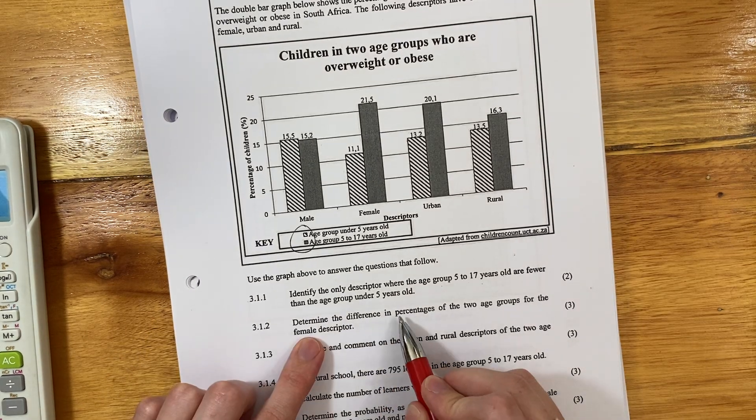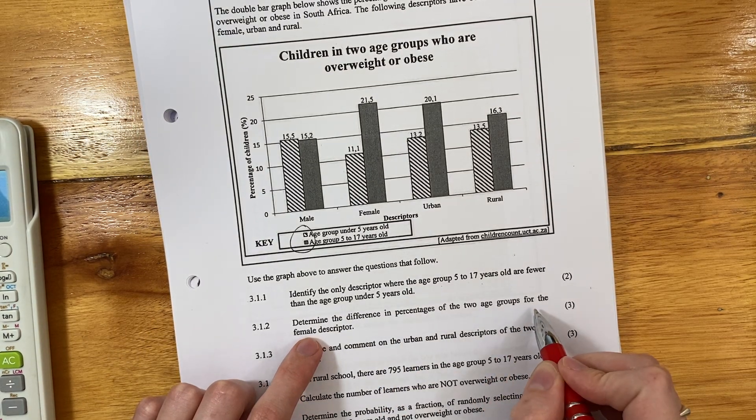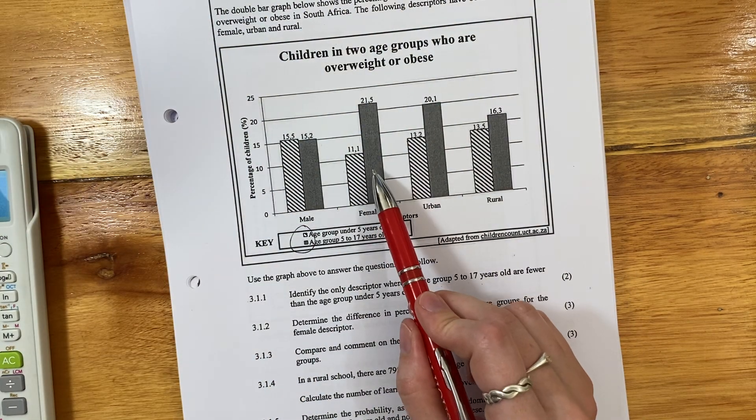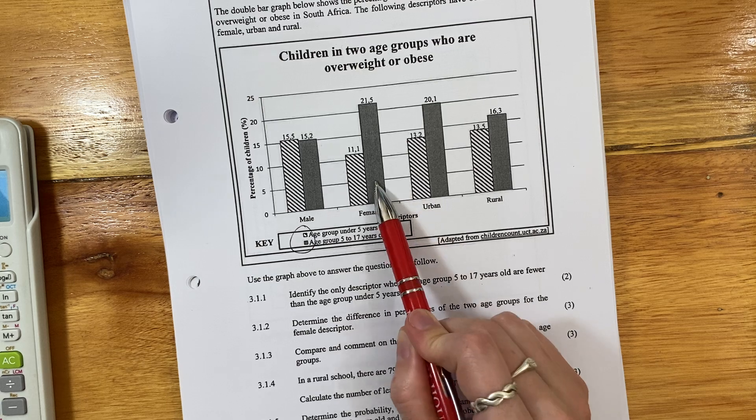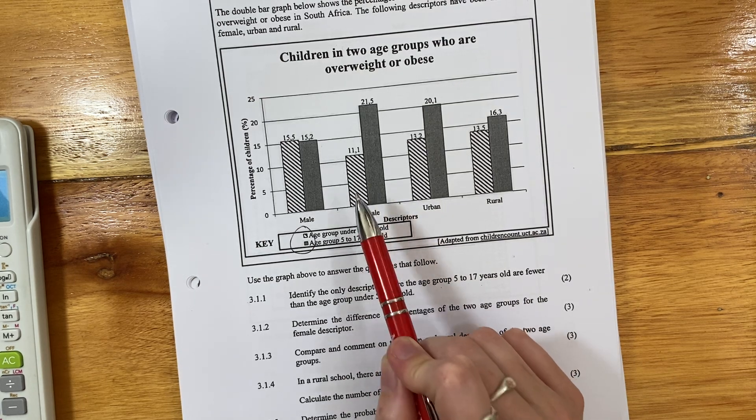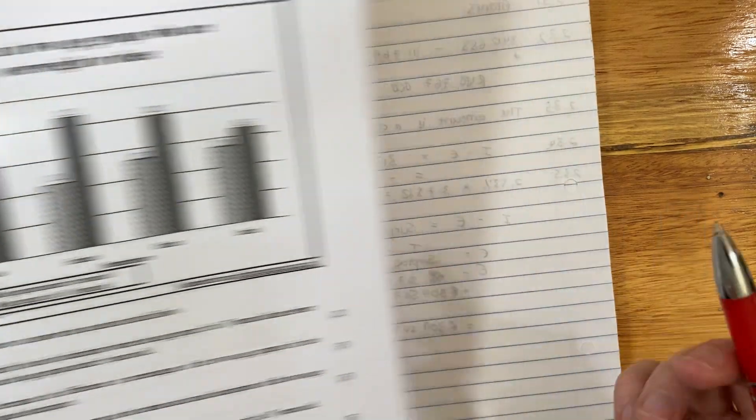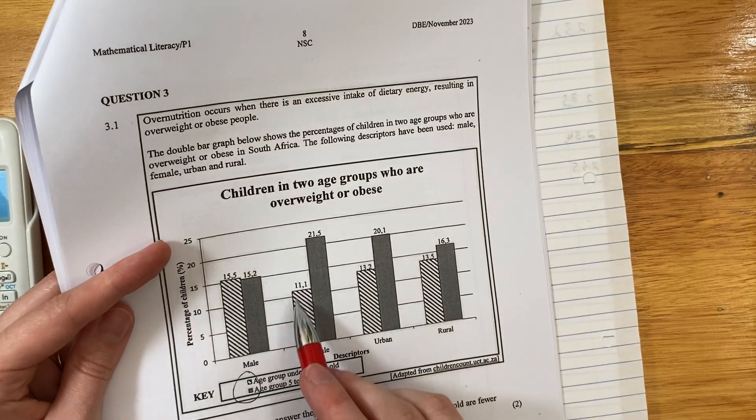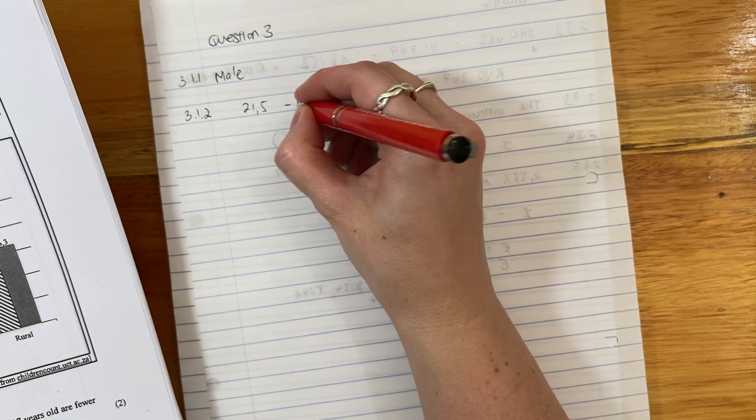Determine the difference in percentage of the two age groups for the female descriptor. So basically it's saying what is the differing percentage between this age group and this age group? This is 5 to 17, this is below 5. So not a difficult one. 21.5, where do we get that? Those are my labels. Mine is 11.1.